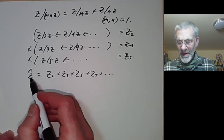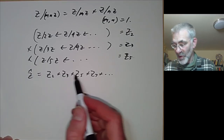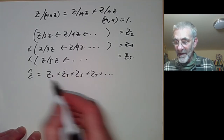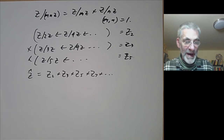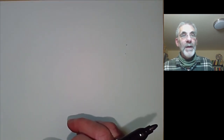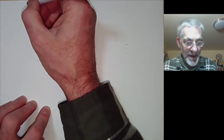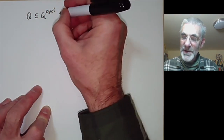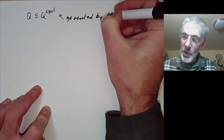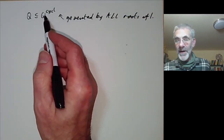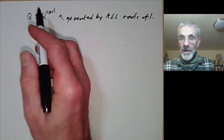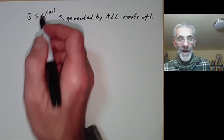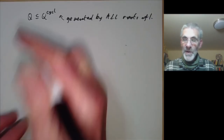By the Chinese Remainder Theorem, Z/mnZ ≅ Z/mZ × Z/nZ when gcd(m,n)=1, so the profinite completion of Z splits into a product: the inverse limit of Z/2Z → Z/4Z → … gives the 2-adic integers, times the 3-adic integers, times the 5-adic integers, and so on. So the absolute Galois group of a finite field is just the product of the p-adic integers for all primes p. Slightly surprisingly, this profinite completion has zero divisors because it's a product of various rings, whereas the individual p-adic integers don't have zero divisors. Now let's work out the Galois group of the maximal cyclotomic field of Q, generated by all roots of unity.